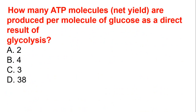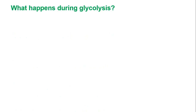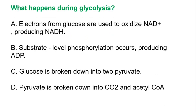How many ATP molecules are produced per molecule of glucose as a direct result of glycolysis? The answer is A, which is 2. What happens during glycolysis? A, electrons from glucose are used to oxidize NADH producing NAD+. B, substrate-level phosphorylation occurs producing ATP. C, glucose is broken down into pyruvate. D, pyruvate is broken down into carbon dioxide and acetyl-CoA. The answer is C, glucose is broken down into pyruvate.